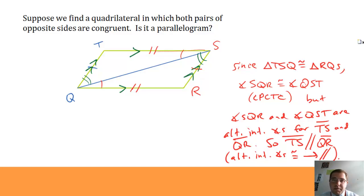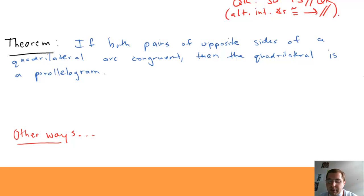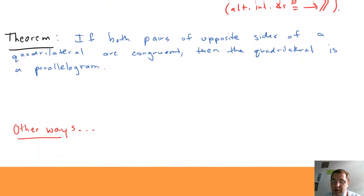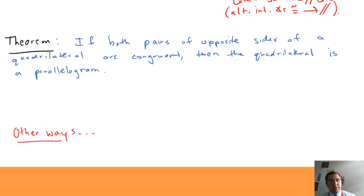That is a loose verbal proof of this theorem: if both pairs of opposite sides of a quadrilateral are congruent, then the quadrilateral is a parallelogram. That is the converse of the theorem that if a quadrilateral is a parallelogram, then the opposite sides are congruent. So it turns out we can show a quadrilateral is a parallelogram if we know that both pairs of opposite sides are congruent.